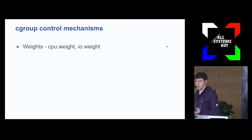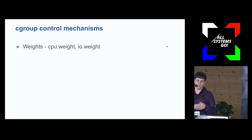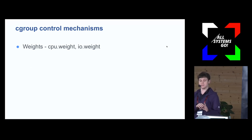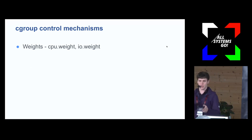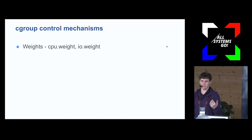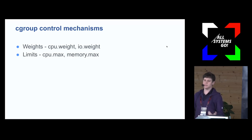Cgroup has a bunch of control mechanisms. One is weights — CPU weight or IO weight — which allows you to give out proportional amounts of CPU or a resource across the tree. Sibling cgroups compete on a resource. Weights work nicely because they divide evenly: if anyone wants to consume more CPU they can, but as soon as it becomes contended, CPU weight determines who gets how much. Limits, like cpu.max or memory.max, let you say a cgroup can only take, say, five gigabytes of memory — a hard limit. If it reaches that and can't get more memory, the OOM killer kills things.